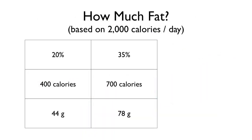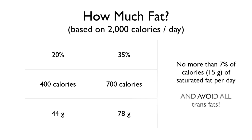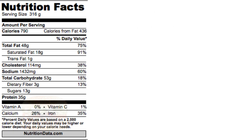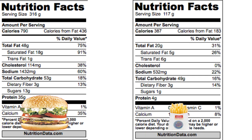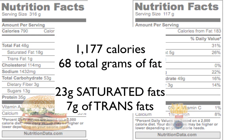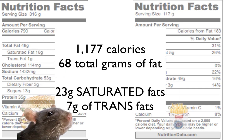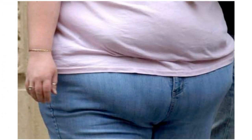How much fat should you really be eating? Based on a 2,000-calorie-per-day diet, the healthy range is 20–35% of your calories from fat. The American Heart Association recommends no more than 7%, or 15 grams, of saturated fat per day, and recommends you avoid all trans fats. If you eat a lot of fast food, a typical burger and fries can contain 68 grams of fat, 23 grams of which is saturated and 7 grams of trans fats — all by itself.